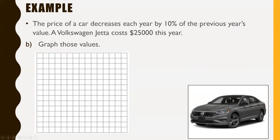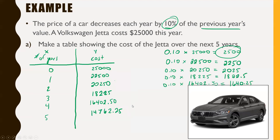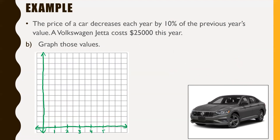Now graph those values. Drawing my axes — I like going slightly inwards. For years along the x-axis: 1, 2, 3, 4, and 5. For the cost on the y-axis: the highest is $25,000 and the lowest is just under $15,000. Every two blocks = $5,000, so the scale goes $5,000, $10,000, $15,000, $20,000, $25,000. I'll label the y-axis 'cost' and the x-axis 'number of years.'